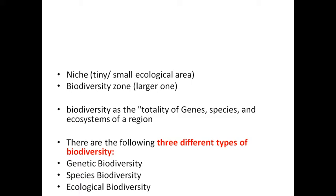Species diversity means the lots of diversities of different species. The third type is ecological diversity. Sundarbans is an example of ecological diversity — it is a combination of plant community, various animal communities and their interaction zones and functional relations.